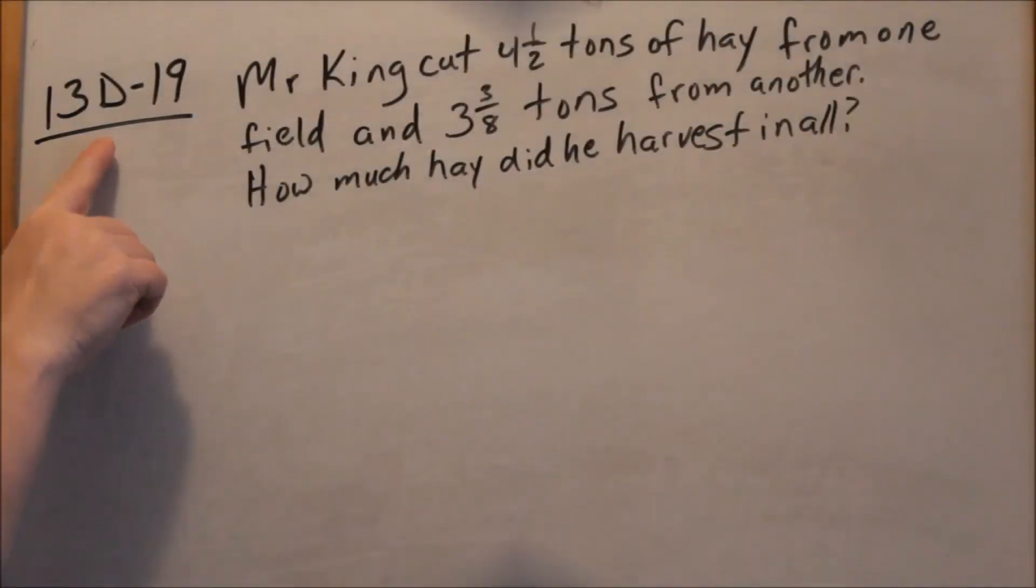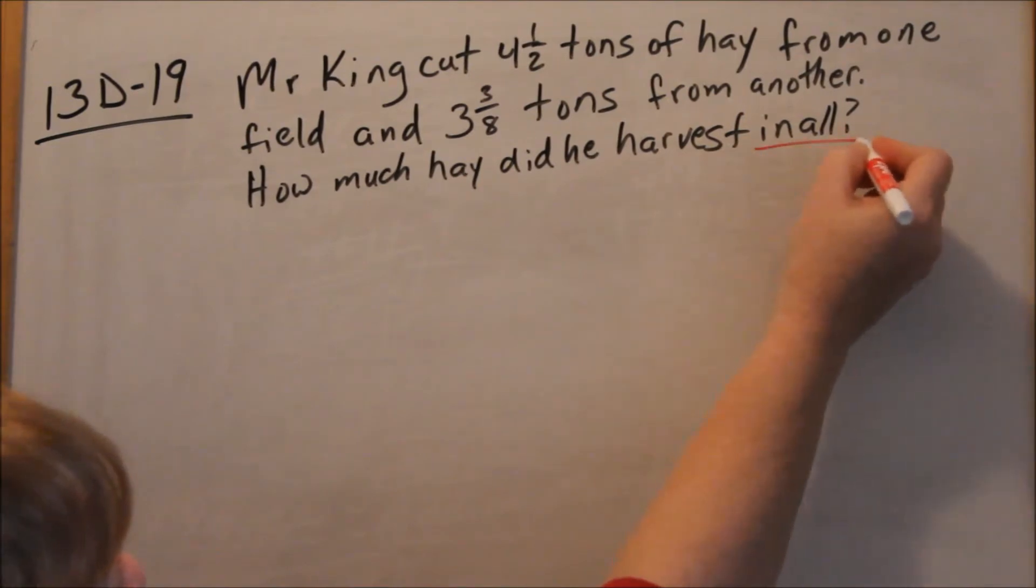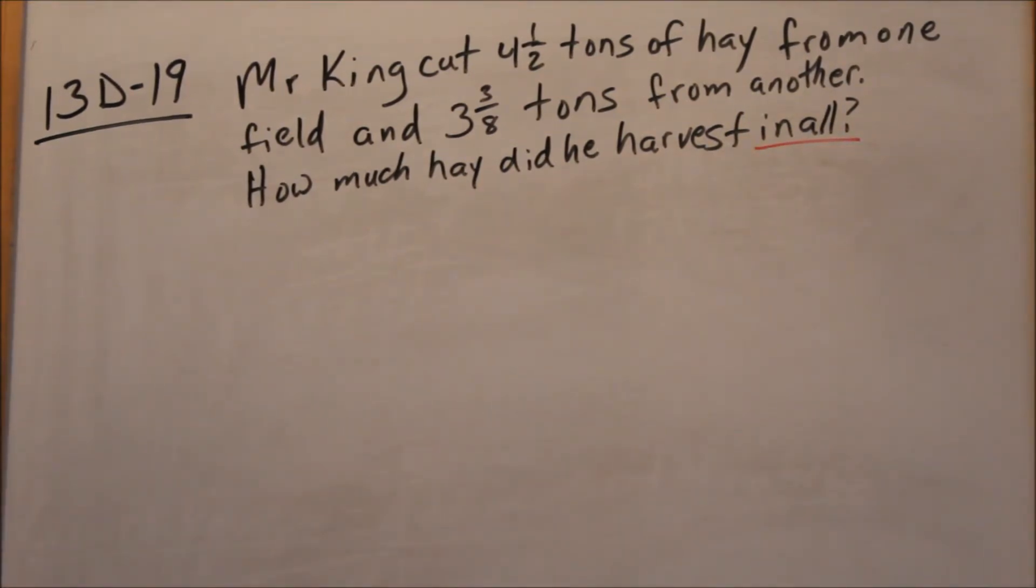Okay, we're going to do 13D19. Mr. King cut 4 1⁄2 tons of hay from one field and 3 3⁄8 tons from another. How much hay did he harvest in all? Okay, in all. Keyword, add. So if he cut 4 1⁄2 tons from one field and then 3 3⁄8 from another, we have to add to find out how much he did in all.